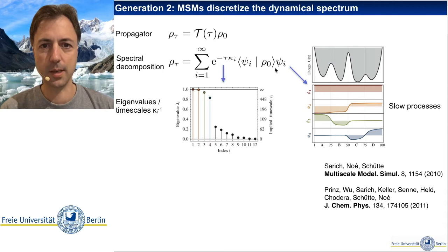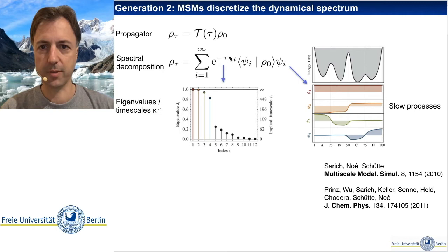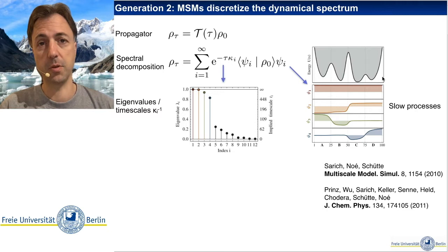As an example, consider a system with four wells — an energy landscape with four minima and therefore four metastable states. The spectrum, meaning the eigenvalues of this decomposition, will have four eigenvalues close to one because there are four metastable states. One of these eigenvalues will be exactly equal to one, corresponding to the unique equilibrium distribution, and three eigenvalues will be close to but smaller than one.